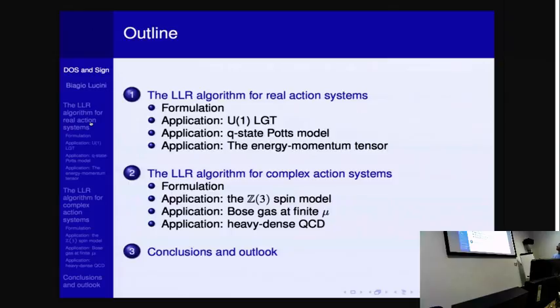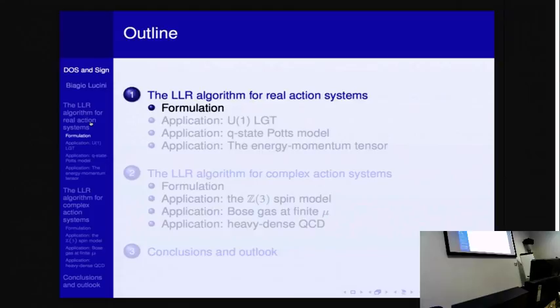This is the outline of my talk. I will start by seeing how the method performs when you don't have a sign problem. It's a new method. We better make sure that it works before we do something that is trickier. So we start by saying how we formulate the method and then we discuss three applications. In the second part of the talk, I will finally move to the complex action systems and again, I will see what changes in the method and discuss three applications. And finally, I will conclude and list what, in my opinion, are the open problems.